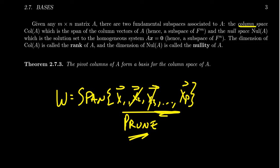So we've introduced the column space, and we've introduced the null space. Remember, the column space is the span of the column vectors of A. This will necessarily be a subspace of F^m. And the null space is the solution set to the homogeneous system Ax equals zero, which is necessarily going to be F^n.